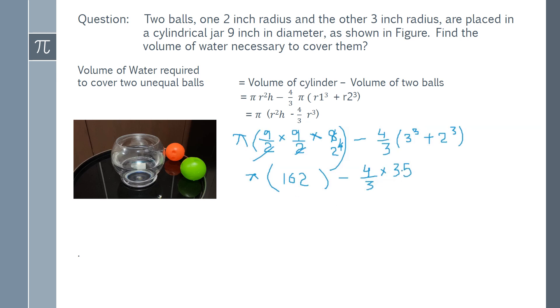Next 4 by 3 into 35 which is 46.66. And subtract this from 162. So, it is 115.34. And multiply this answer with this pi value 3.14. So, the answer is 362.16 cubic inches.